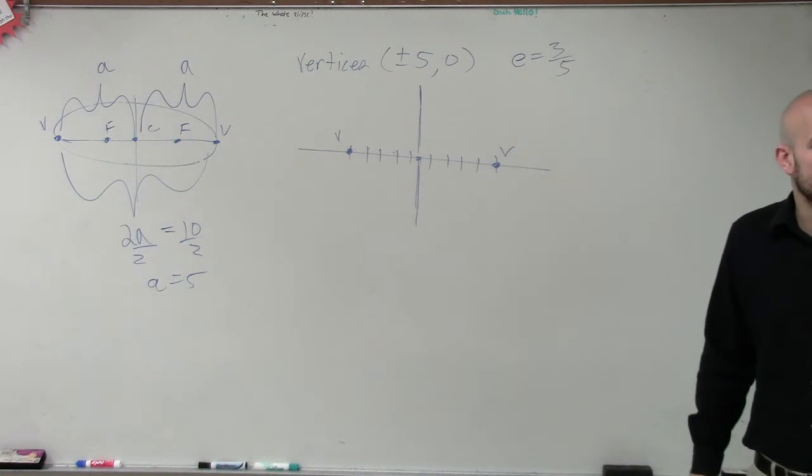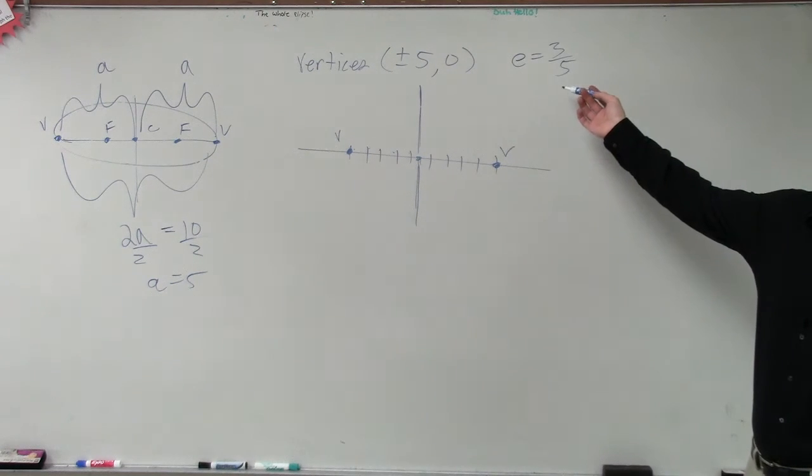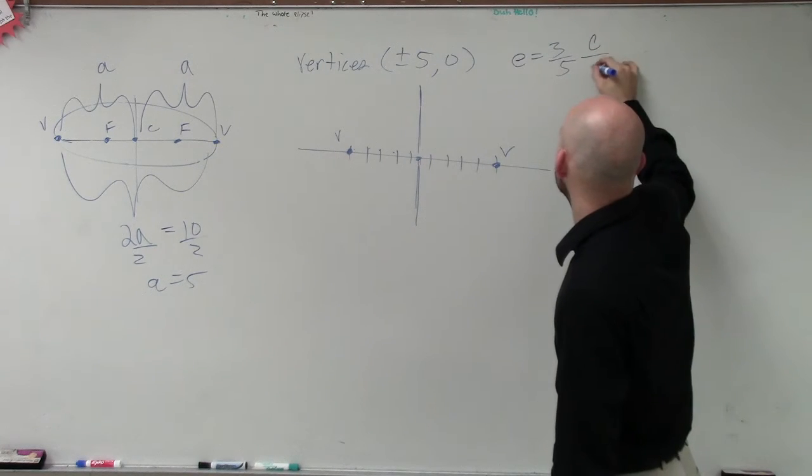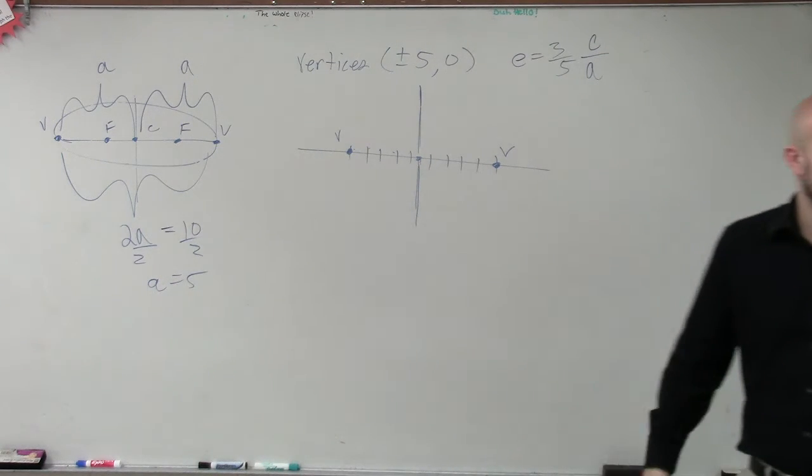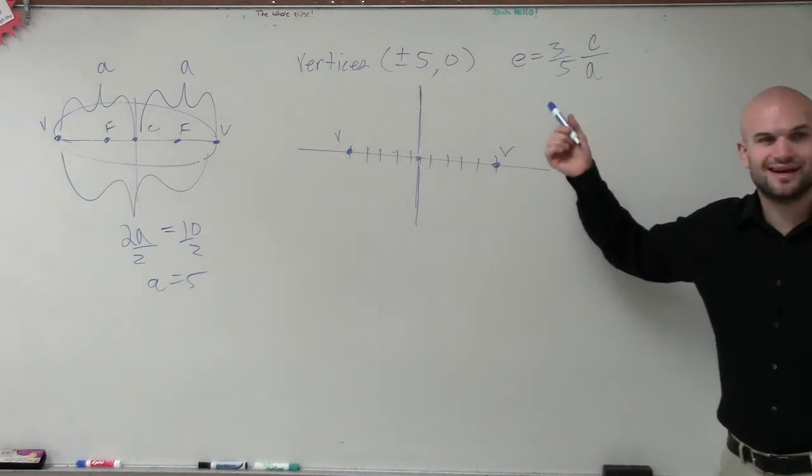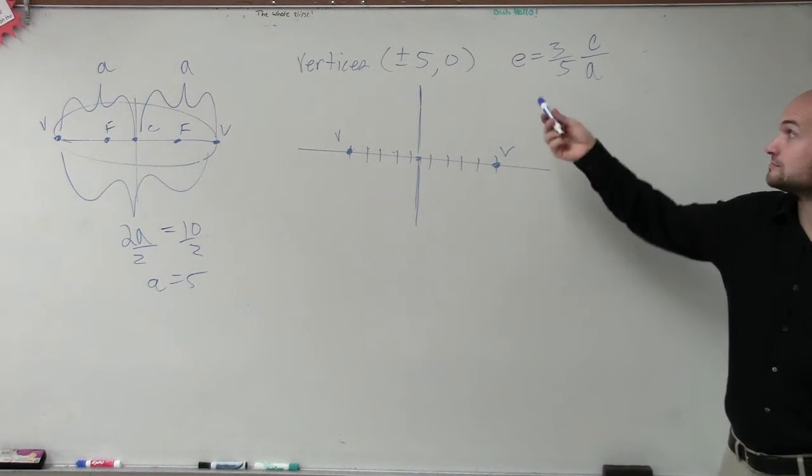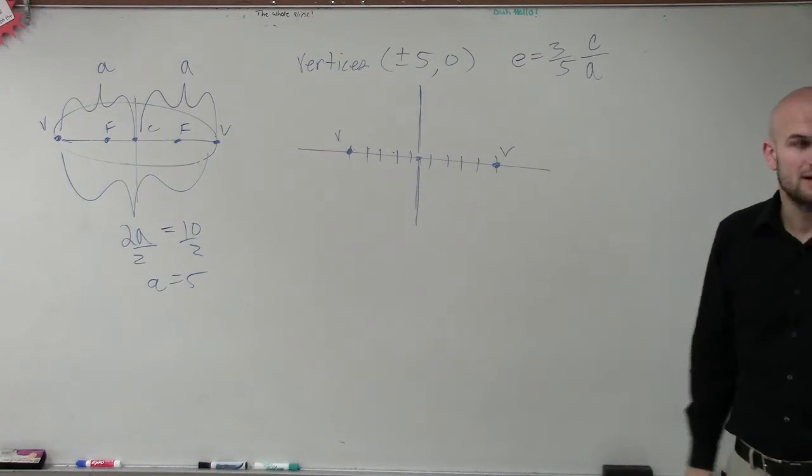But we just need a, we already know a is 5, because what's your eccentricity? Remember, eccentricity is c over a. So we're also just going to look at the equation and say, hey, a is 5 right here. We already know that. And do we know what c is now?